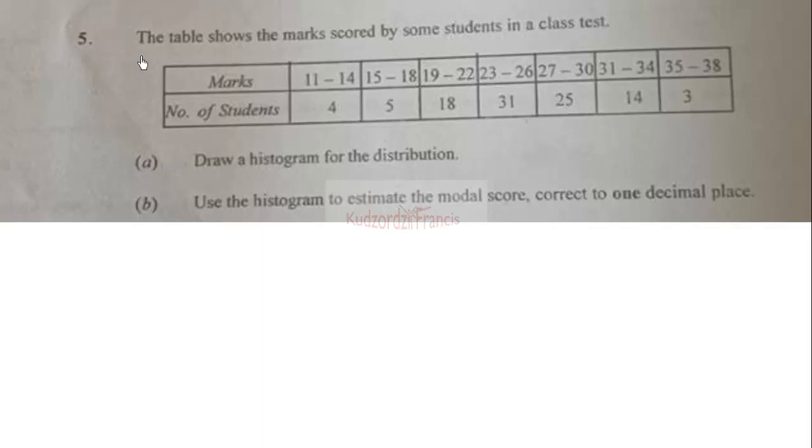WASSCE 2018 Elective Mathematics Paper 2, Question 5. The table shows marks scored by some students in a class test. Part A: Draw a histogram for the distribution. Part B: Use the histogram to estimate the modal score, correct to one decimal place.